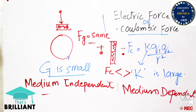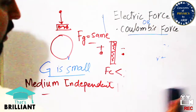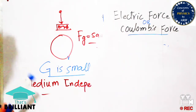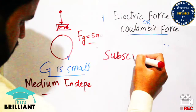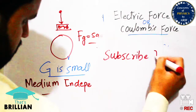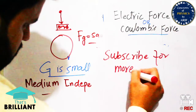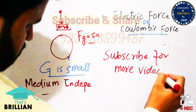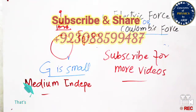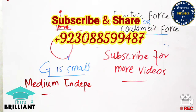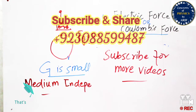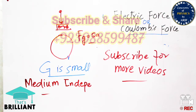Both electric force and gravitational force are generic, or natural, forces. This means we cannot artificially increase or decrease the gravitational pull, and we cannot increase or decrease the attraction or repulsion between two charges. We have now discussed the differences between gravitational force and electric force, including their formulas, their medium dependency, and their nature. See you in the next video. Bye-bye.